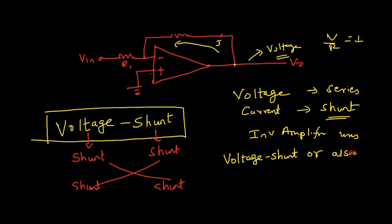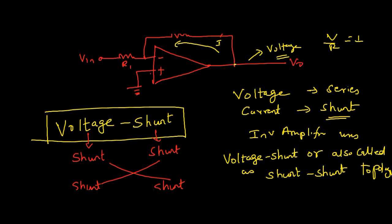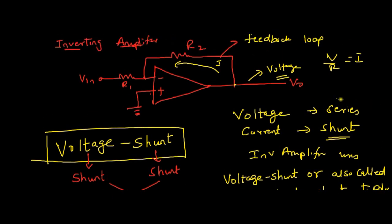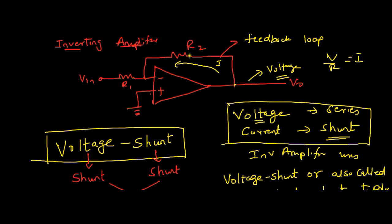Always remember: first, understand the feedback loop and understand what is actually going to the input terminal — either we are applying voltage or current. If we are applying voltage, rename it as series on the second side. If we are using current, use it as shunt.